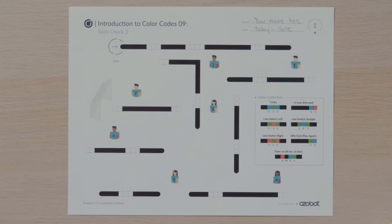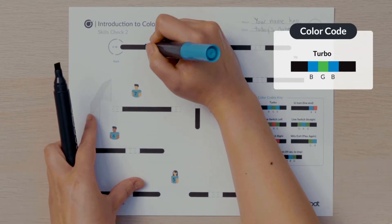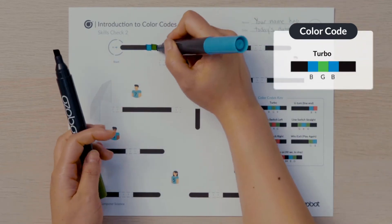Let's get started. Find the start of your activity sheet. The first missing color code will program Ozobot's speed to move around the soccer field. If you had the ball in a soccer game with 30 seconds left on the clock, how do you move? I would move really fast too. Look at the color code's key to find the speed you will program Ozobot to move at.